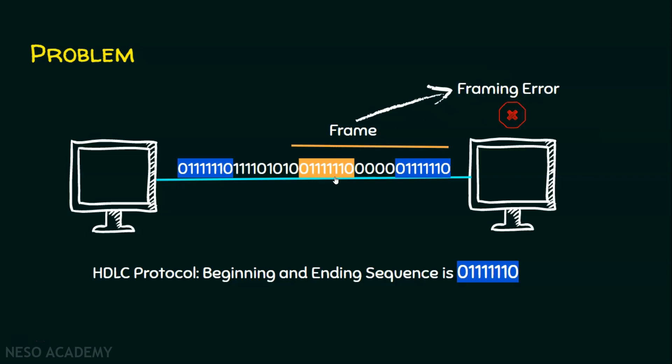Actually, this is not the frame that was created by the sender — the whole information is the frame. So this has to be handled. The problem statement is: if the beginning sequence or the ending sequence appear in the data part — because this data part is received from the upper layers and we don't know what the upper layers generate — the receiver may misunderstand that this is the end of the frame. So we are required to rectify this issue.